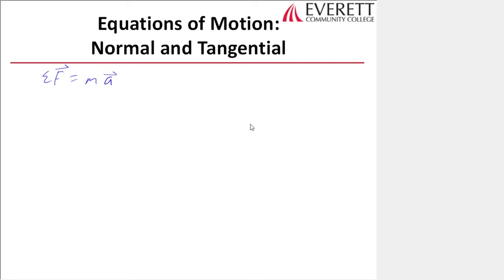In normal-tangential coordinates we no longer use I, J, and K. Instead, we have a particle moving along a path with three new axes. The first is UT, a unit vector in the tangential direction—this is the only component of velocity, and it changes as the particle slides along the path.